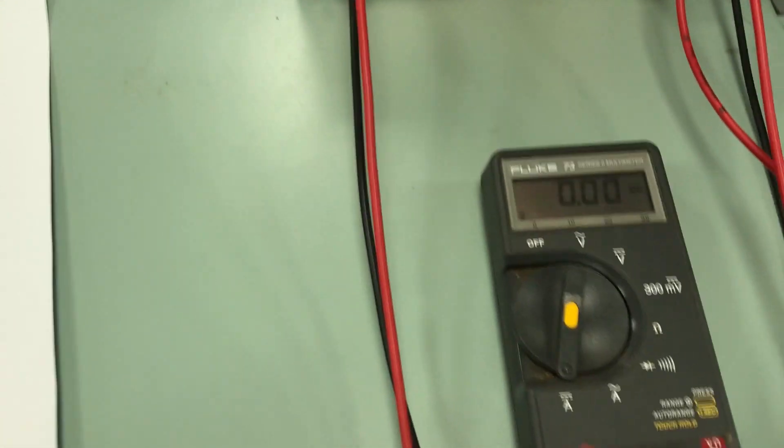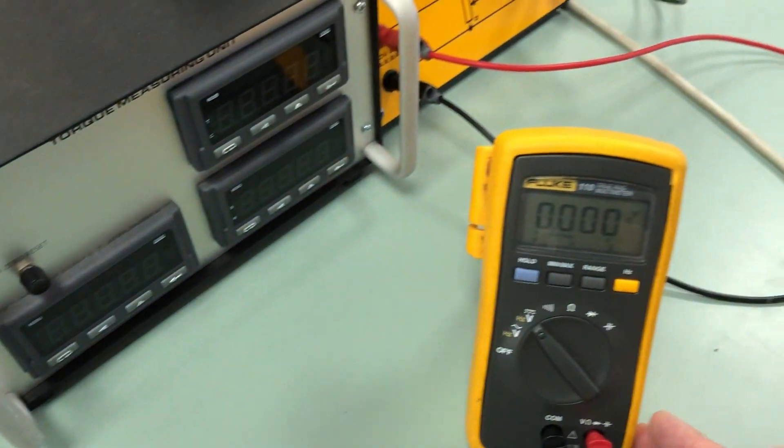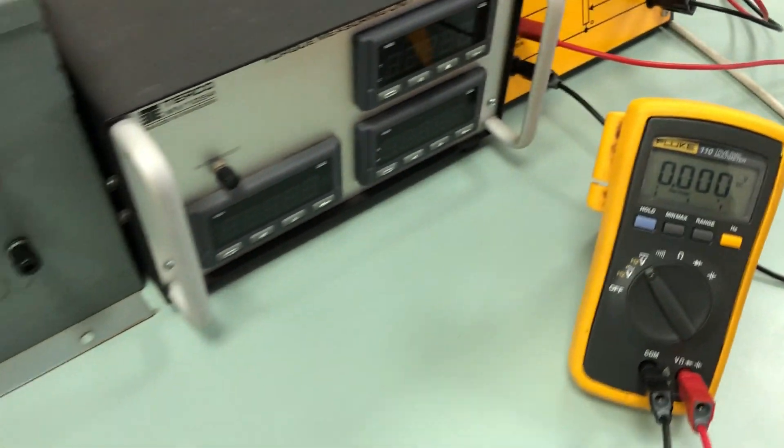And so this is the field current. This is the armature current. And this is the armature supply voltage.